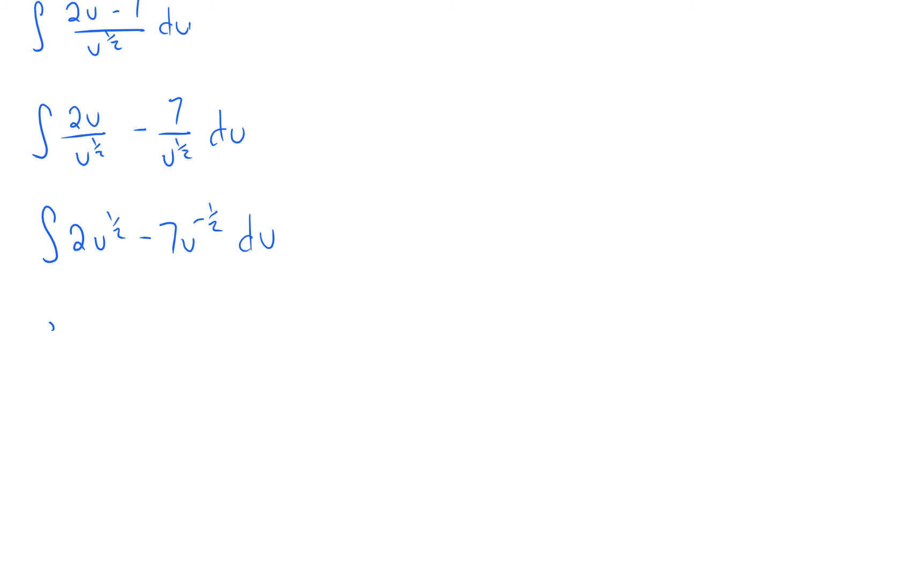And then keep on going down. This reduces to 2u to the one half minus 7u to the negative one half du. And then here we can integrate. So 2u to the one half, that becomes 4 thirds u to the three halves. Add one to my exponent minus 14u to the one half. Add one to the exponent. Then you multiply by the reciprocal of it. If you don't see what I did there, maybe pause it here and work it out quickly. And remember, plus c.